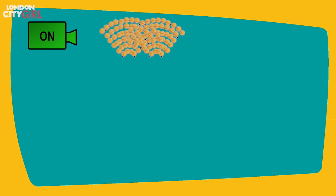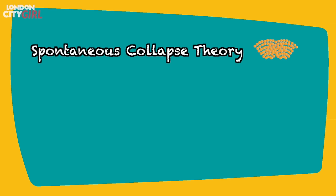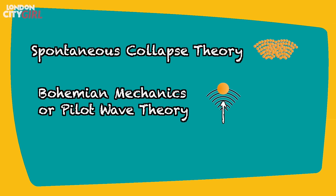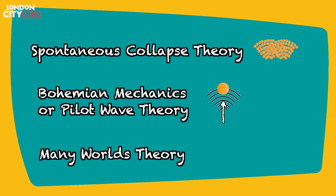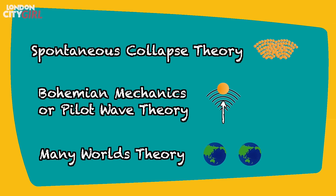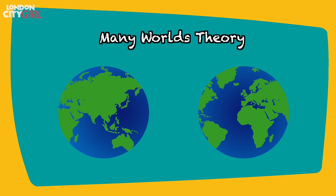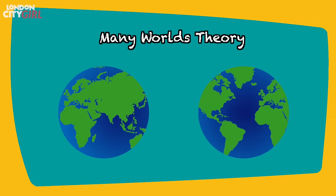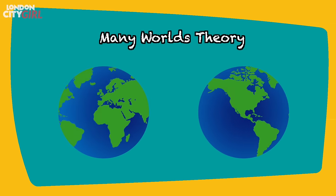The Many Worlds Theory. Now we know that measuring appears to have an effect on the behaviour of particles, and there have been many theories to explain this. A few notable ones are the Spontaneous Collapse Theory, Bohmian Mechanics or Pilot Wave Theory, and the Many Worlds Theory. Of all the theories, the one that has captured popular imagination is unsurprisingly the Many Worlds Theory. It states that anything that can happen does happen.